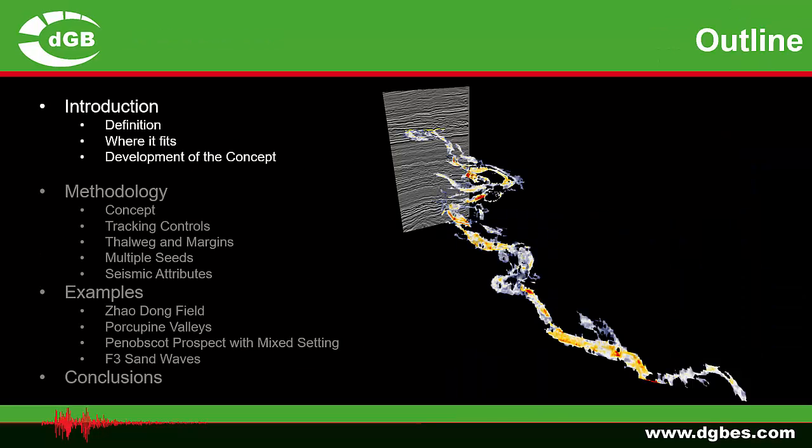We will start by introducing the thalweg tracker — where it comes from, how it was developed, and where it fits in the scheme of auto trackers. We then discuss the methodology, the concept, how you can control the tracker, and then we will give a number of examples from different studies carried out in different types of settings.